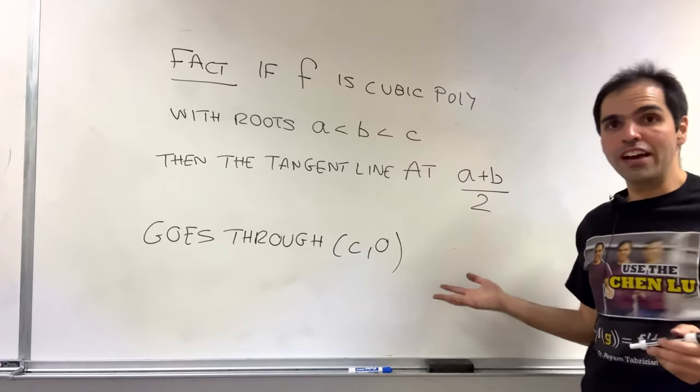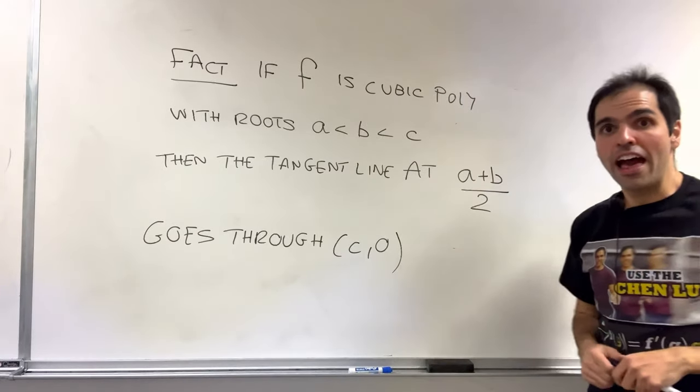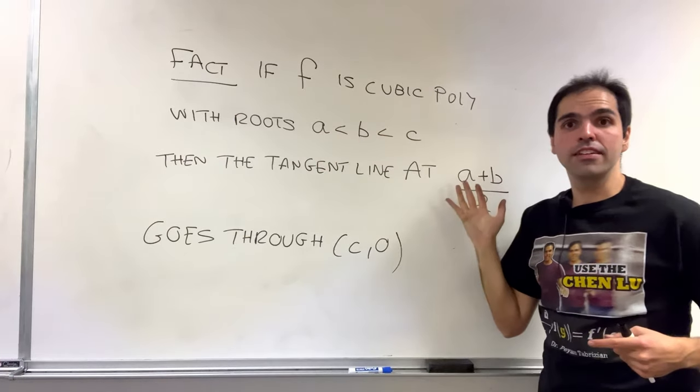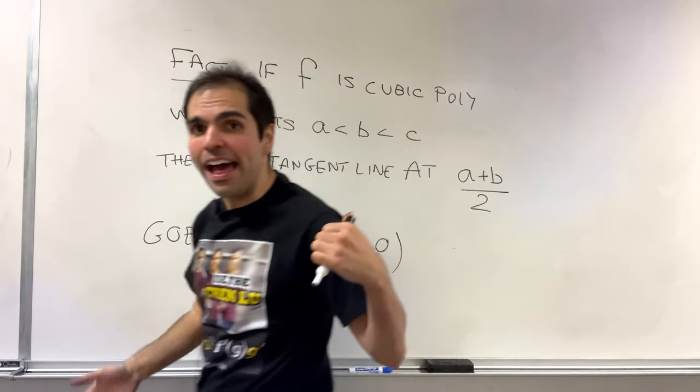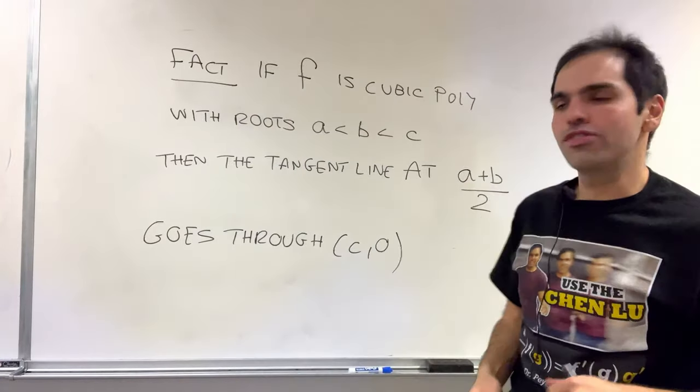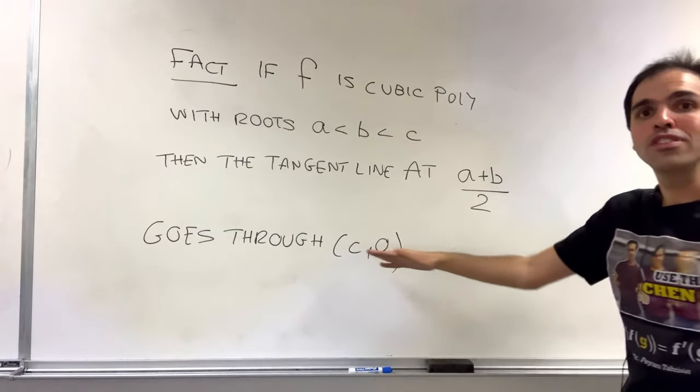So in fact, what have we shown? We've shown that if f is a cubic polynomial with roots a less than b less than c, then the tangent line at the average of the two smaller roots actually goes through the third root. How cool is that?